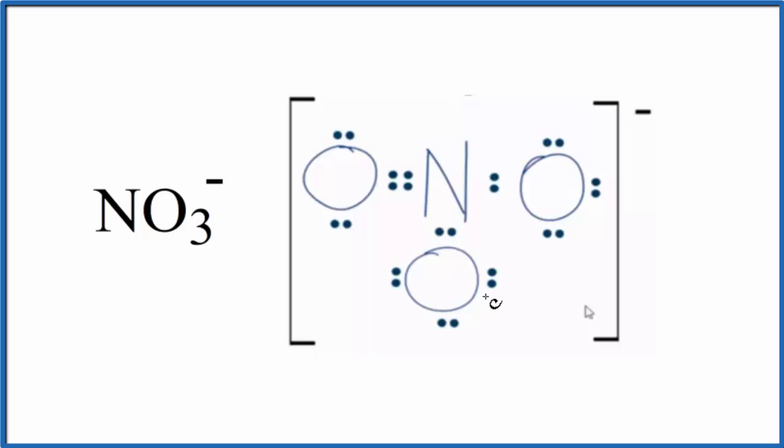The actual structure would be an average of those three resonance structures. But the molecular geometry and electron geometry for NO3 minus, the nitrate ion, is trigonal planar. This is Dr. B, thanks for watching.